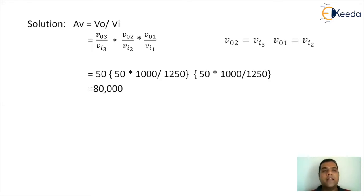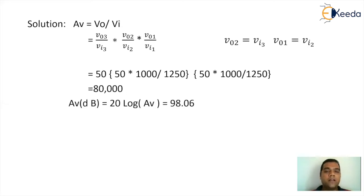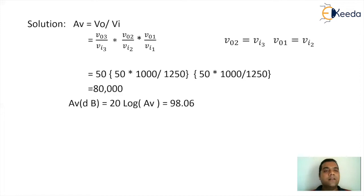To convert 80,000 into dB, we take 20 log of 80,000, which gives 98.06 dB. So the correct answer for this question is 98 dB, which is option C.